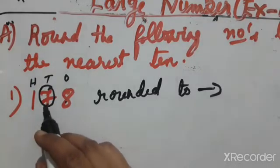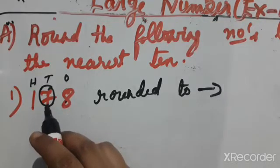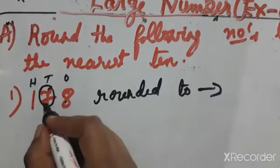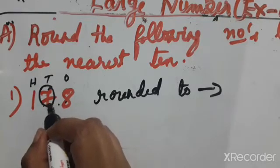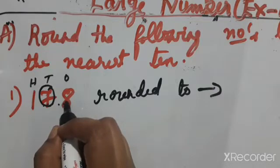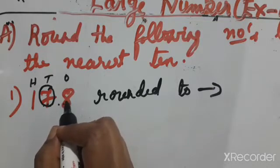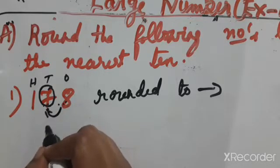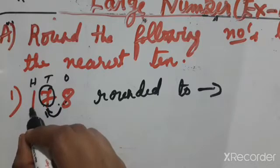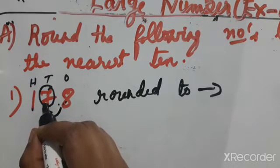Now, rounding 178 to the nearest tens. According to the poem: knock the door at the tens place, then check the next digit. Knock on seven — the neighbor is eight. Ask: do you have five rupees or more? Eight means this person is rich. Eight can help its best friend, so one is added to seven. Seven will become eight.